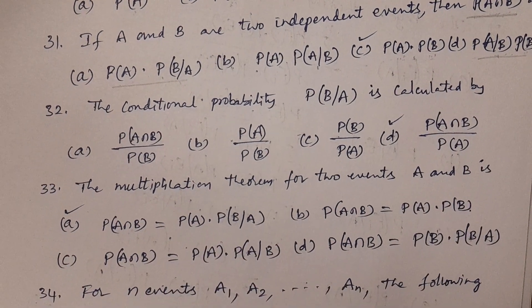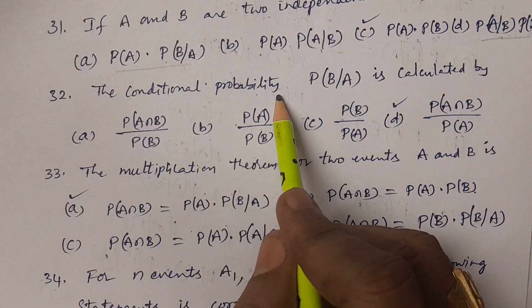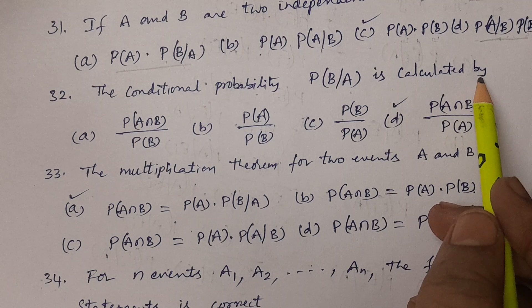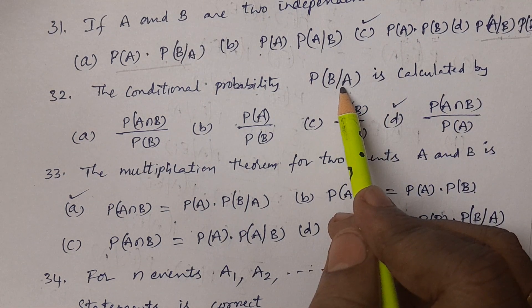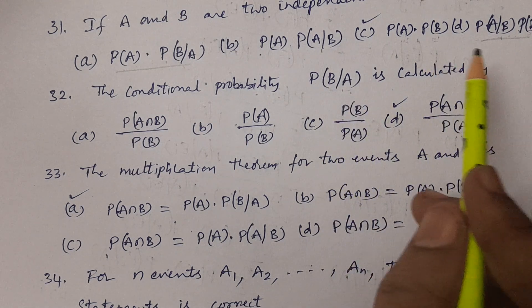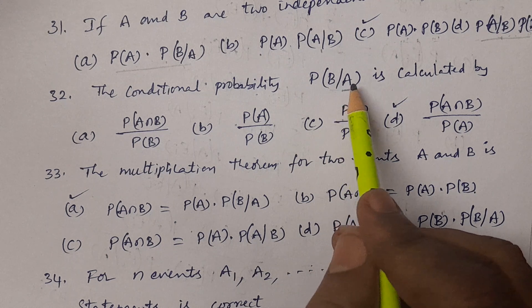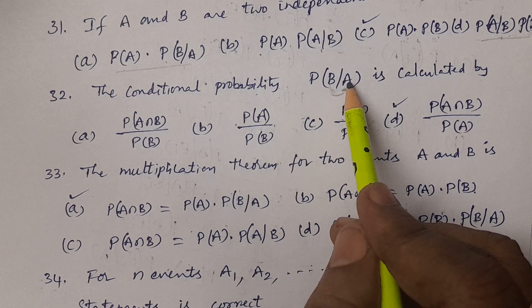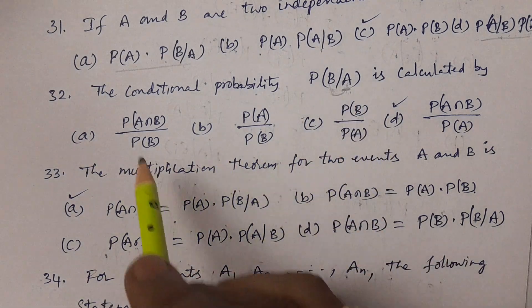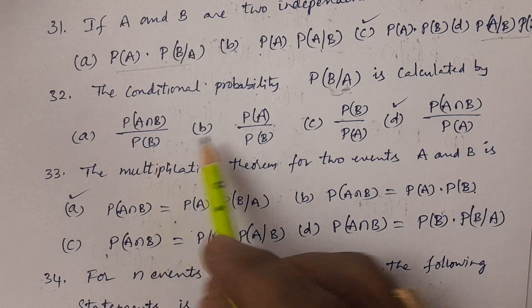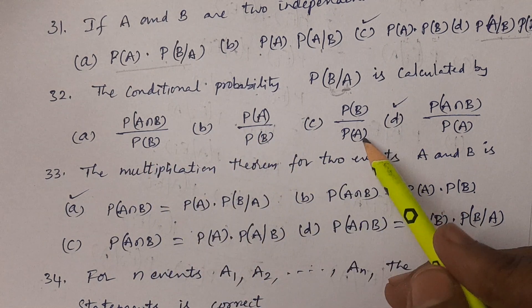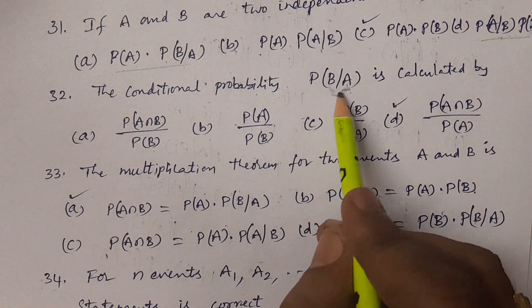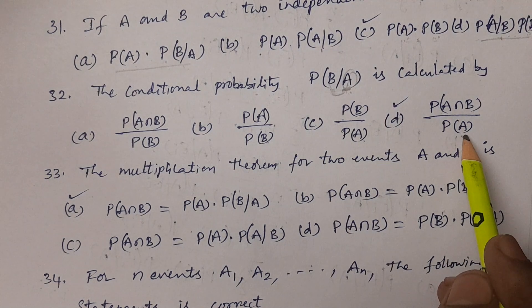Question number 32: The conditional probability P(B|A) is calculated by P(A∩B) divided by P(A). The given event is A, so P(A) is in the denominator. Options include P(A∩B)/P(B), P(A)/P(B), P(B)/P(A), and P(A∩B)/P(A). The answer is option D: P(A∩B) divided by P(A).